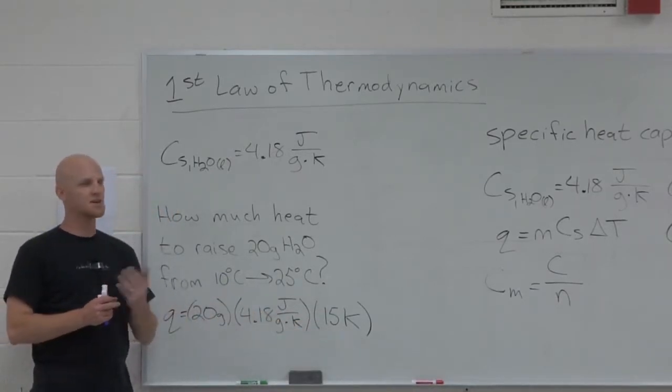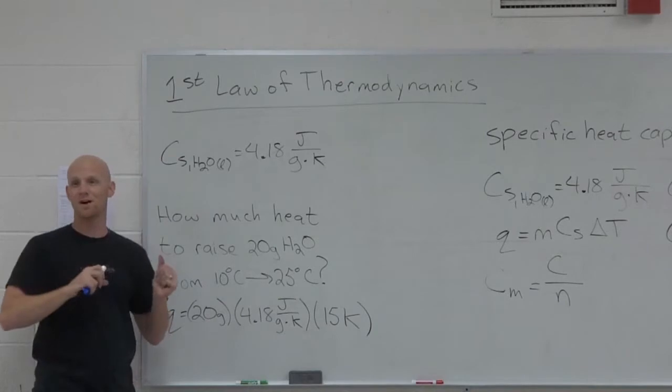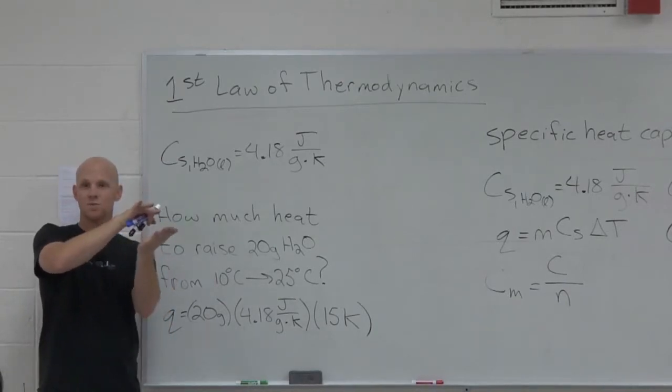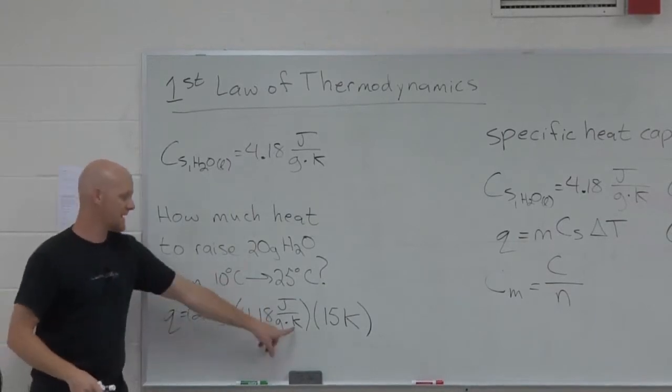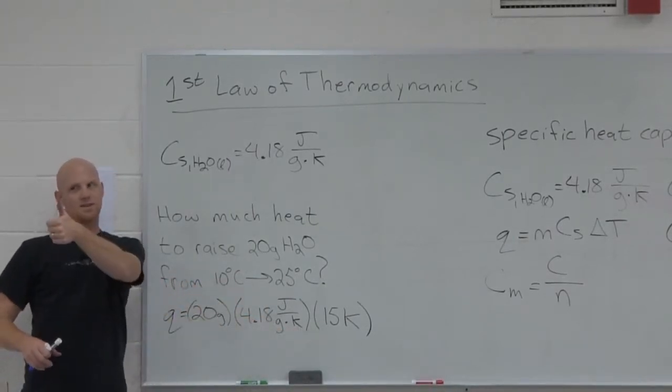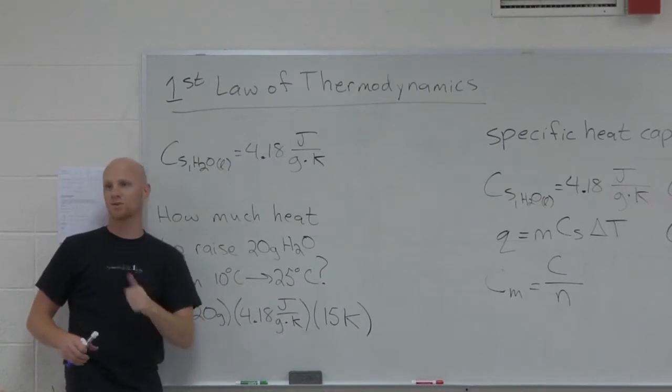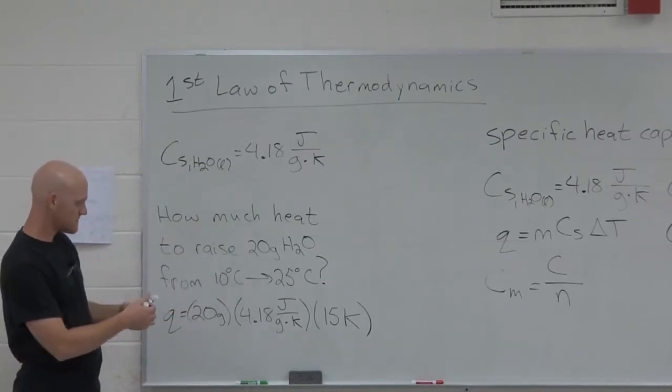No matter which scale I'm looking at, Celsius or kelvin, delta T is the same value. There's the same amount of space in between the degrees for each. But I changed it to kelvin so the units would match. And my point again was that 15 degree change in Celsius is still a 15 degree change on the kelvin scale.